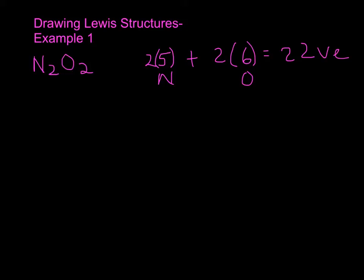Let's go ahead and connect this molecule together. The two nitrogens are bonded together, and we bond an oxygen to each side. We have to stop here because we've used up some of our electrons — each single bond includes two electrons, so we've used up six electrons total.